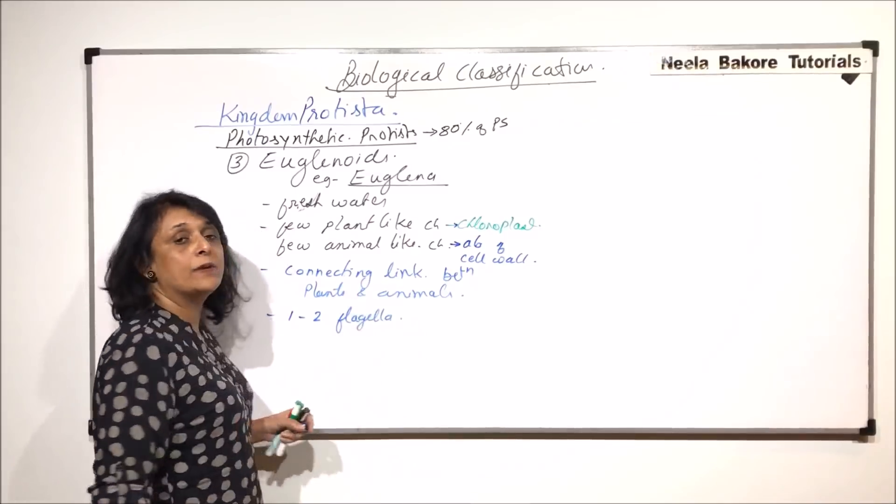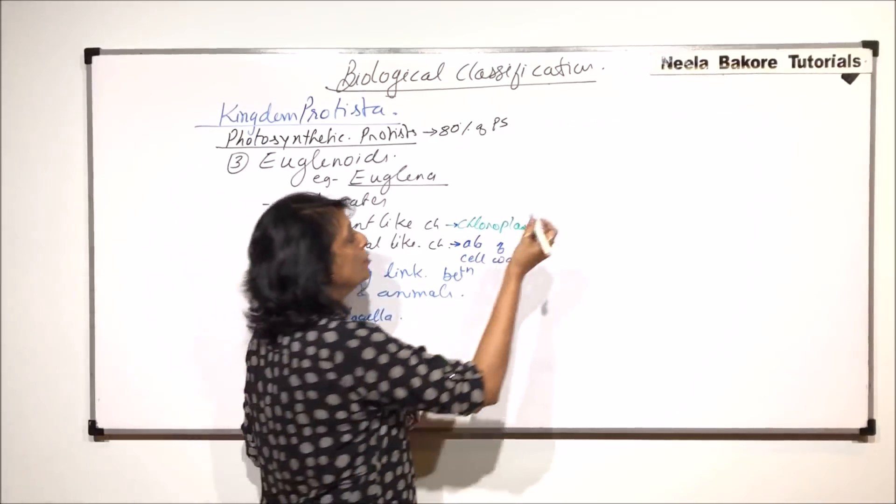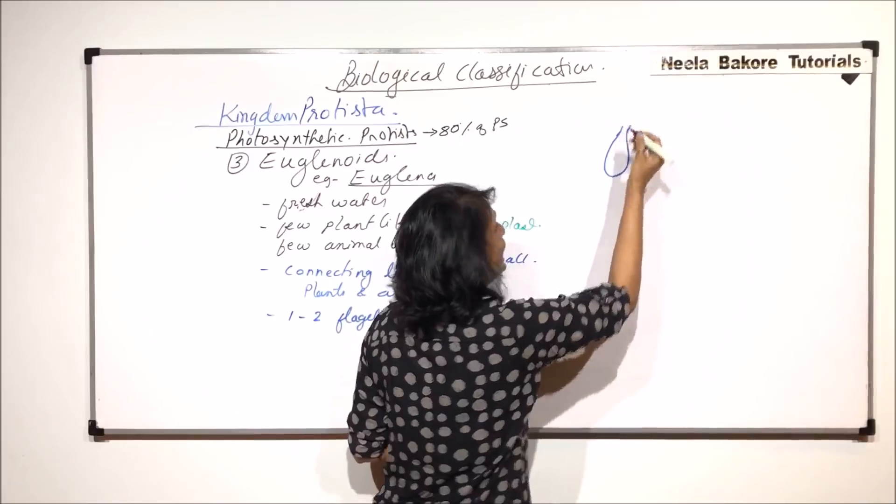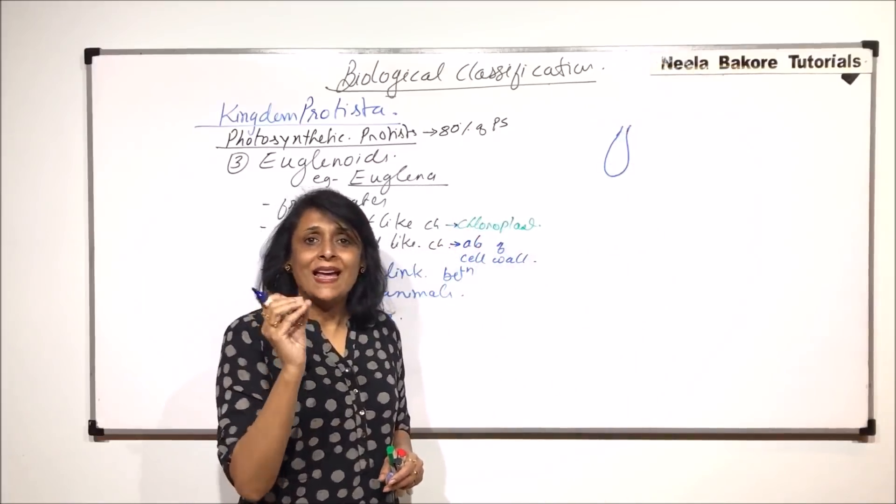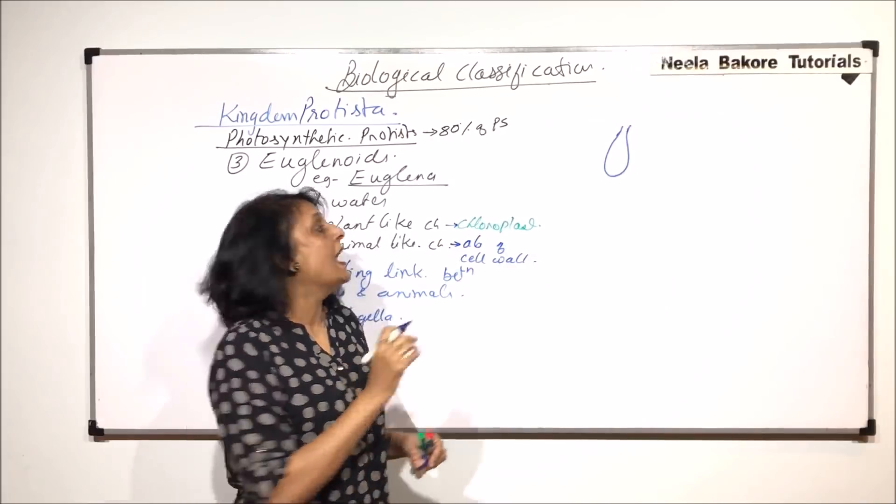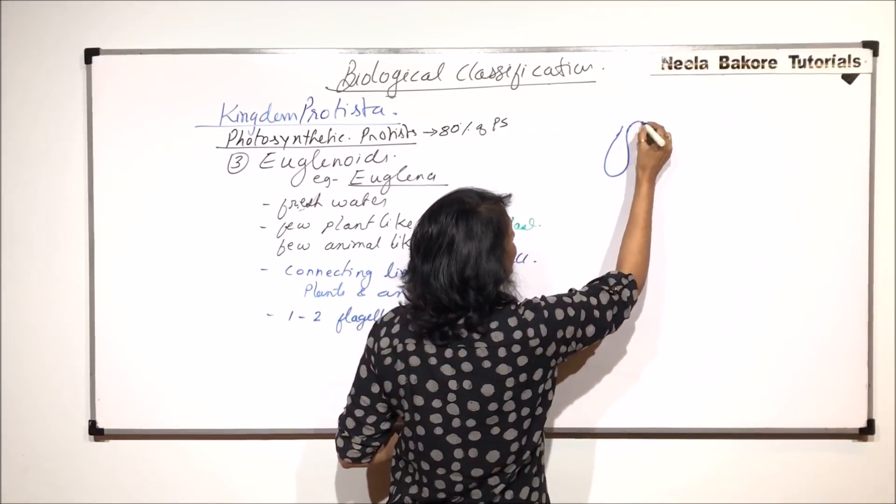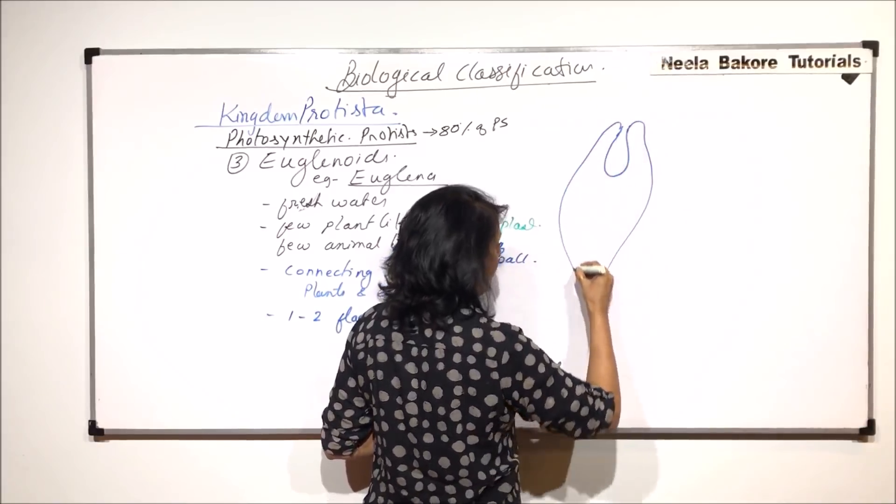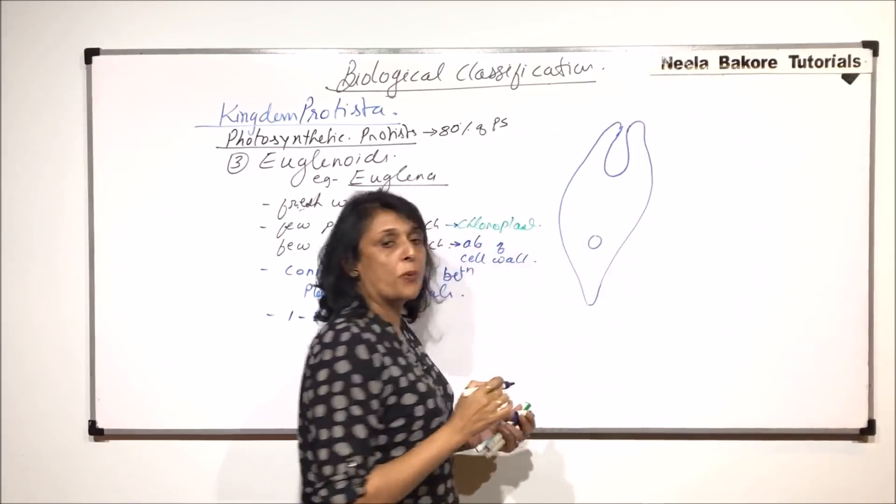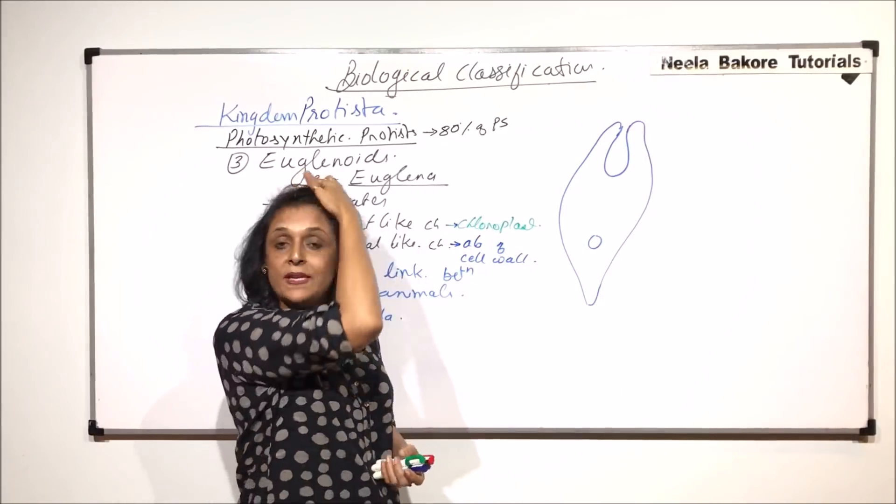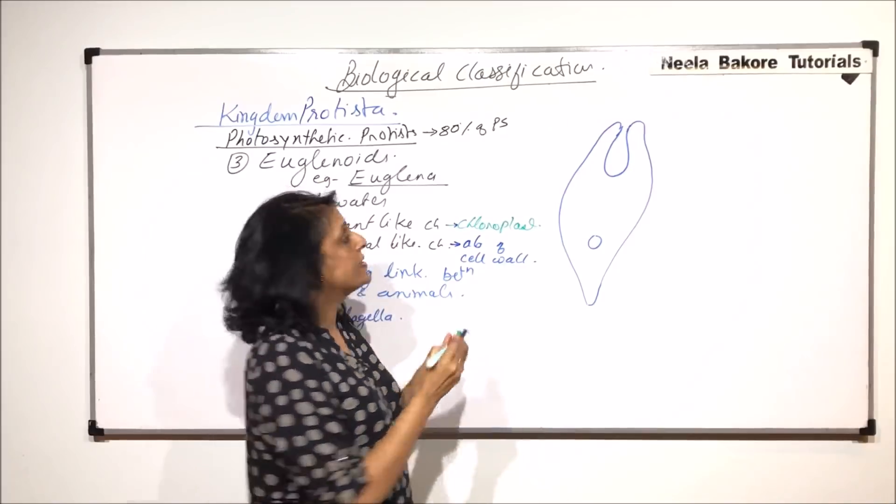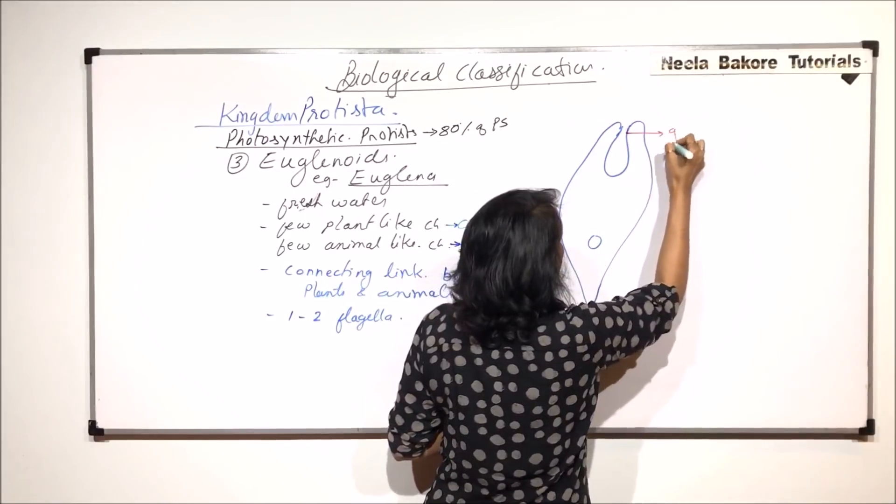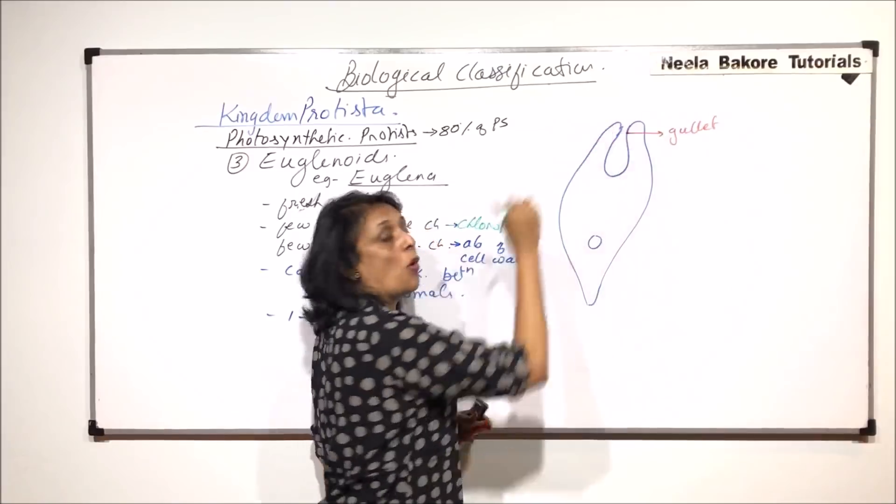We'll draw a simple diagram to understand how these flagella function. The anterior end has a gullet, which is a structure with a mouth and passage through which food enters. This tubel-like structure is the gullet and this is the elongated body. The nucleus is prominent. The flagella are present on the anterior side where the mouth is, and this passage is known as the gullet.